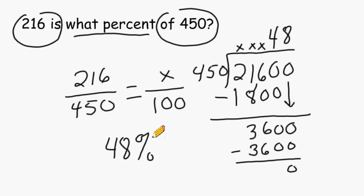So we would say that 216 out of 450 is equal to 48%. And that is just a few examples of how you can use proportions to solve percentage problems.